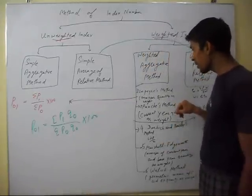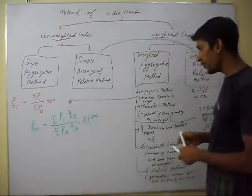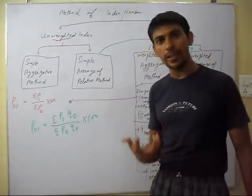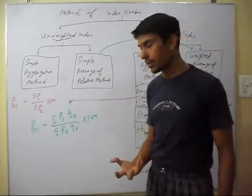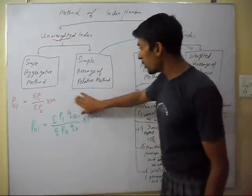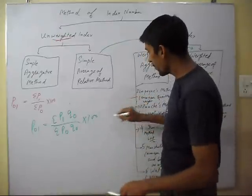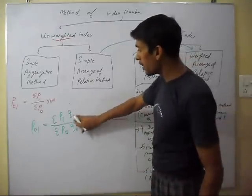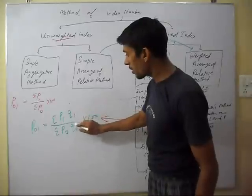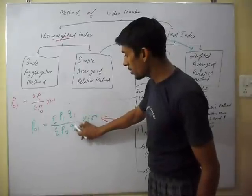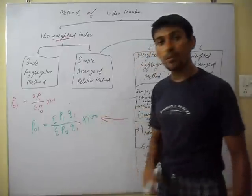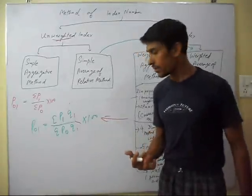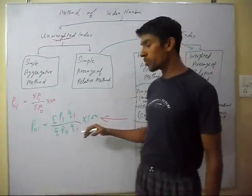In the Paasche method, we use current year quantity as the weight. The formula is: sigma P1 Q1 divided by sigma P0 Q1, multiplied by 100.